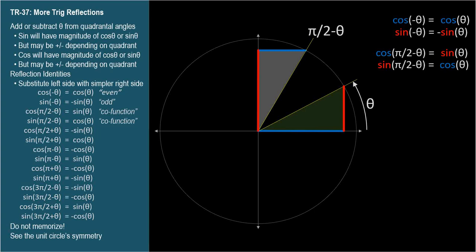We should have some intuition about this if we think about common angles. Let's assume theta is pi over 6, or 30 degrees. Pi over 2 minus theta is pi over 3, or 60 degrees. These are common angles we've memorized.